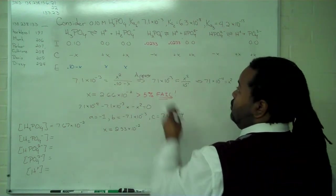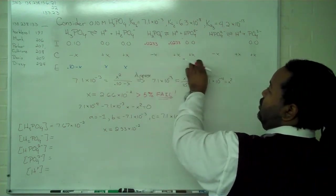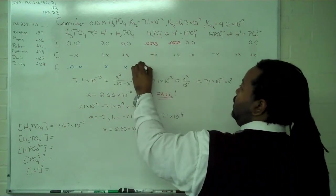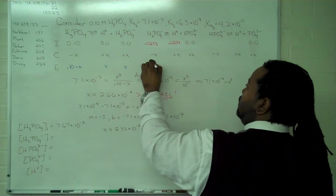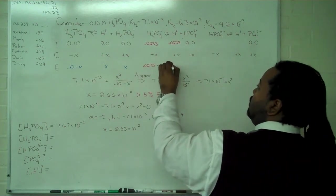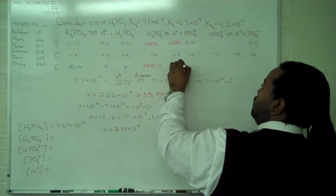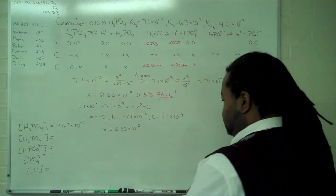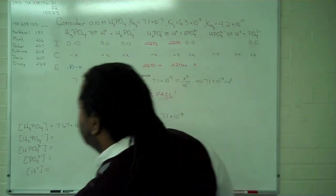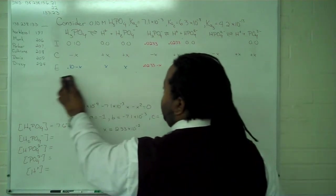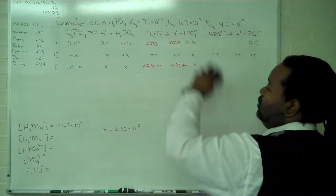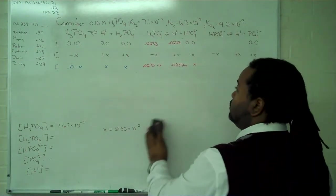So now we can fill in the equilibrium line by adding these two together. So we have 0.0233 minus x, 0.0233 plus x, and then just plus x. So in the interest of space, I can now erase this here as we'll need this area to solve our second dissociation.